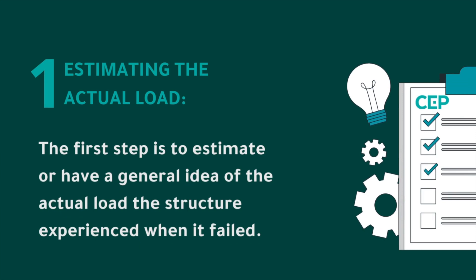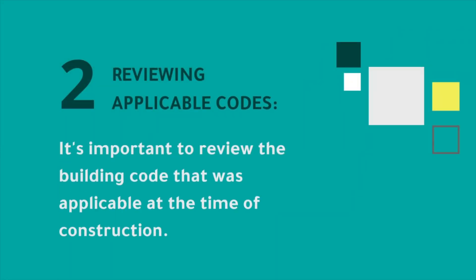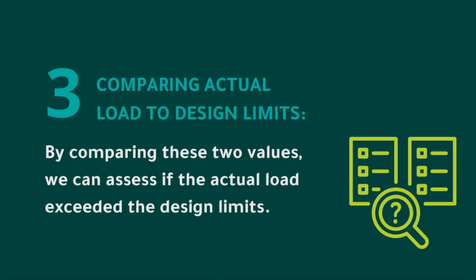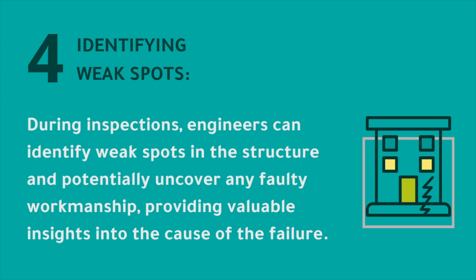One of the most interesting failures you handle are major collapses related to climatic events — snow loading, when there's a lot of snow and a roof collapses. Snow loading failures often involve a lot of forensic engineering. The first step is to estimate the actual load when the structure failed, done during the inspection or by reviewing available weather data. Then we check the code applicable at the time of construction to see what the roof structure should have been designed to resist. We compare the two values to judge whether the actual load exceeded the prescribed design load. During the inspection we also highlight weak spots in the structure and identify any faulty workmanship — this way we can determine the cause of failure.